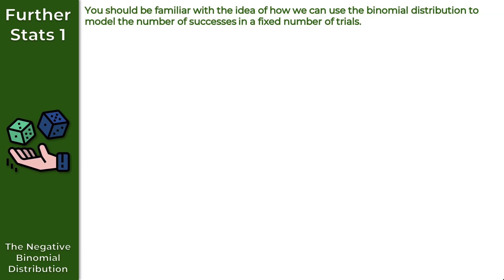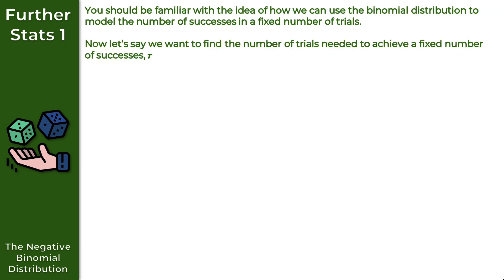In this video, I want to take a look at the negative binomial distribution. You should be familiar with how we can use the binomial distribution to model the number of successes in a fixed number of trials. Now let's say we want to find the number of trials needed to achieve a fixed number of successes, which we denote as R. This is where we can use the negative binomial distribution.